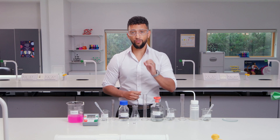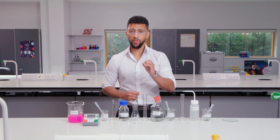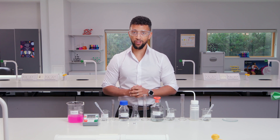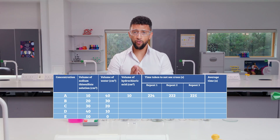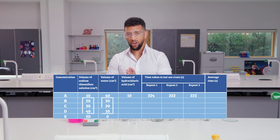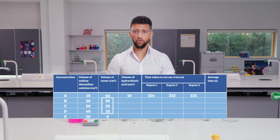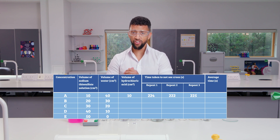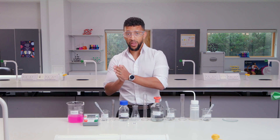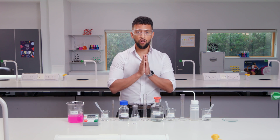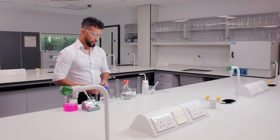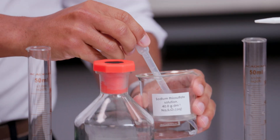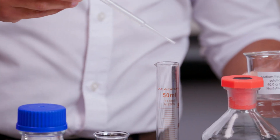We are now going to change the concentration of sodium thiosulfate solution using different volumes of sodium thiosulfate and water to see how concentration affects rate. For concentrations B, C, and D, measure out the volumes of sodium thiosulfate in the results table and add water to make the total volume of sodium thiosulfate and water 50 centimeters cubed each time. Repeat the rest of the steps you did for A, record the times in the results table, and do three repeats. For concentration E, use 50 centimeters cubed of sodium thiosulfate solution and no water.